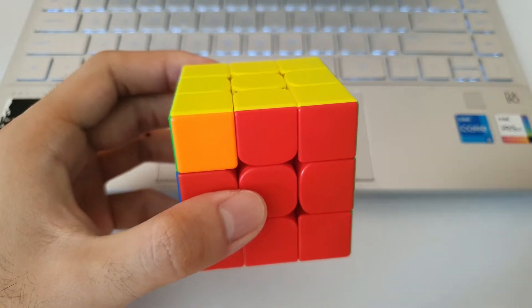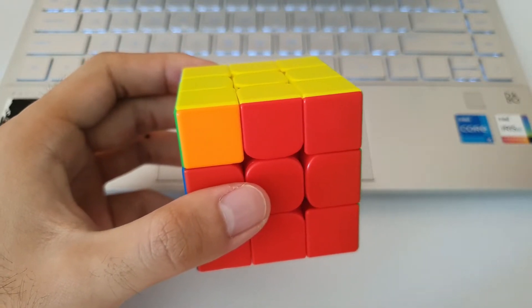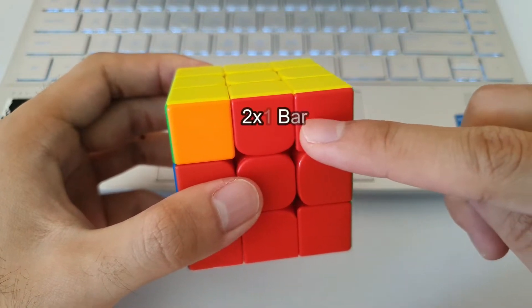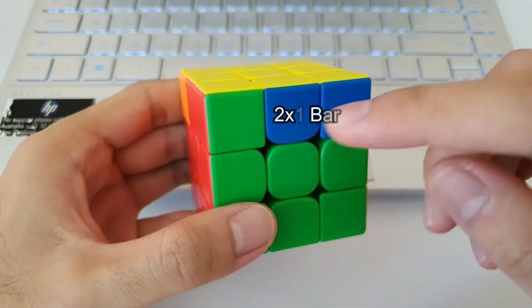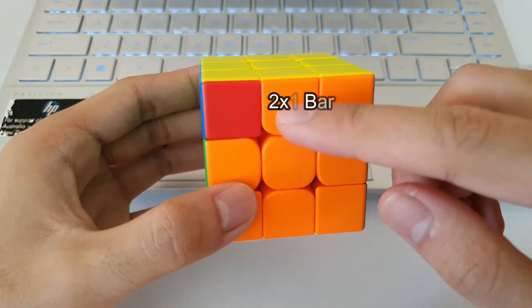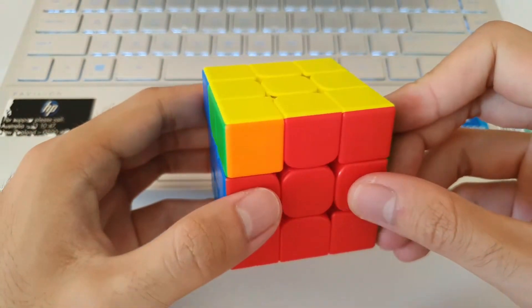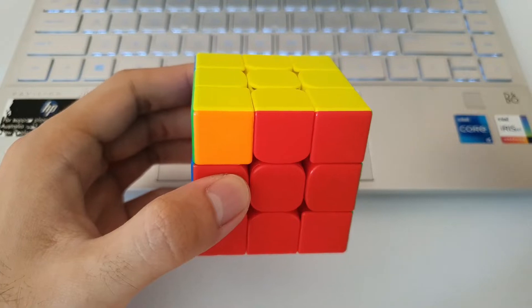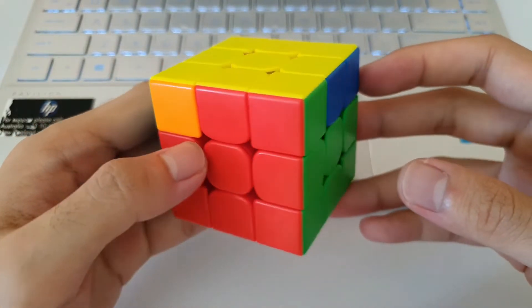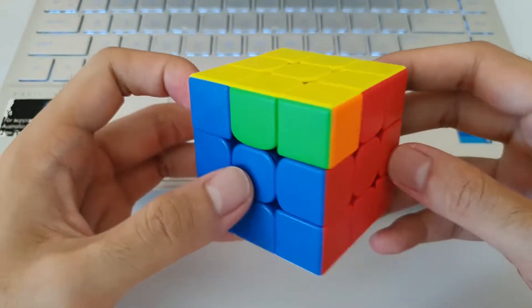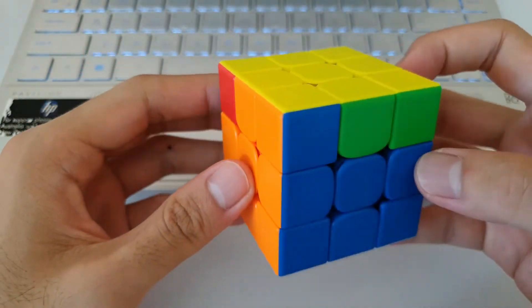So N-perms are usually quite easy to recognize, and that's because they have this 2x1 bar on every single side. So you'll notice that on every side there's always going to be a 2x1 bar. So the benefit of that is that it doesn't actually matter which side you face when you start the algorithm, because every single side looks the same.